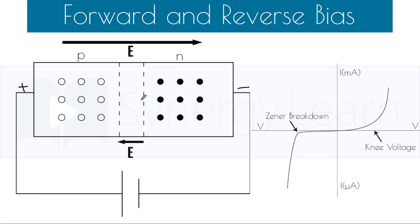In the junction region, there is a depletion region and an electric field from N to P side in an unbiased PN junction diode. The impressed polarity of the cell induces an electric field in the reverse direction, which opposes the original electric field of the depletion region.